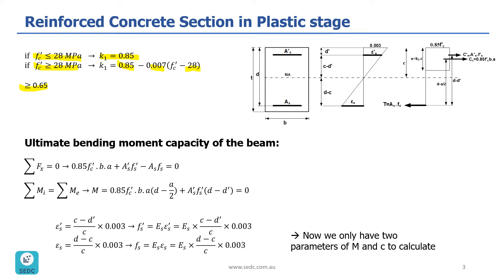Now let's look at our section and also the stress and strain diagrams in this stage. Here you can see the reinforced concrete section with width of b and thickness of t. The direction of bending moment is shown. So we have steel reinforcement in the tension area, which we call A_s, and in the compression area, which we call A prime s. The neutral axis line is shown, and the distance from the tensile steel reinforcement to the extreme compressive fiber of the concrete is shown as d.